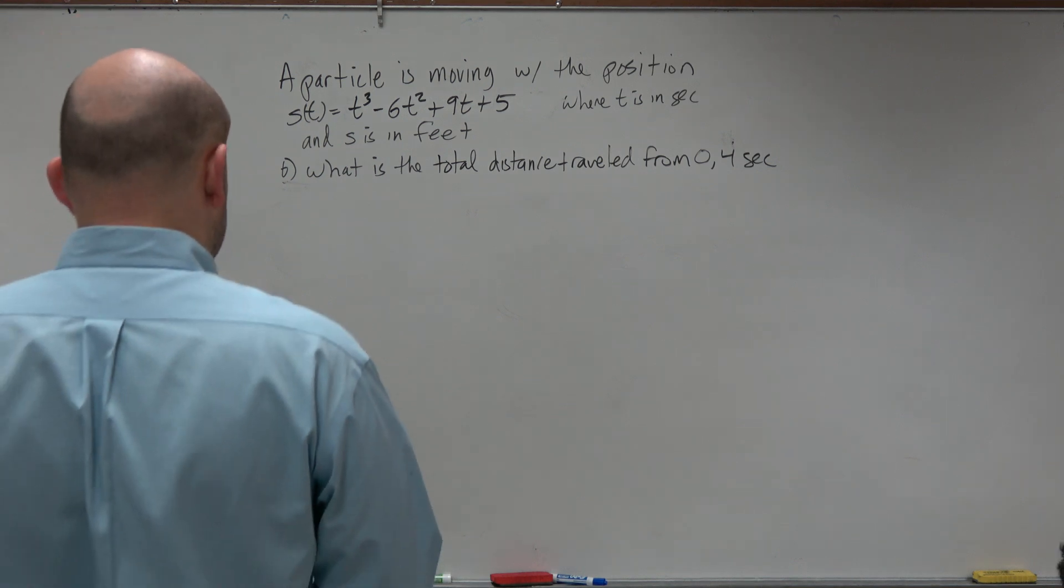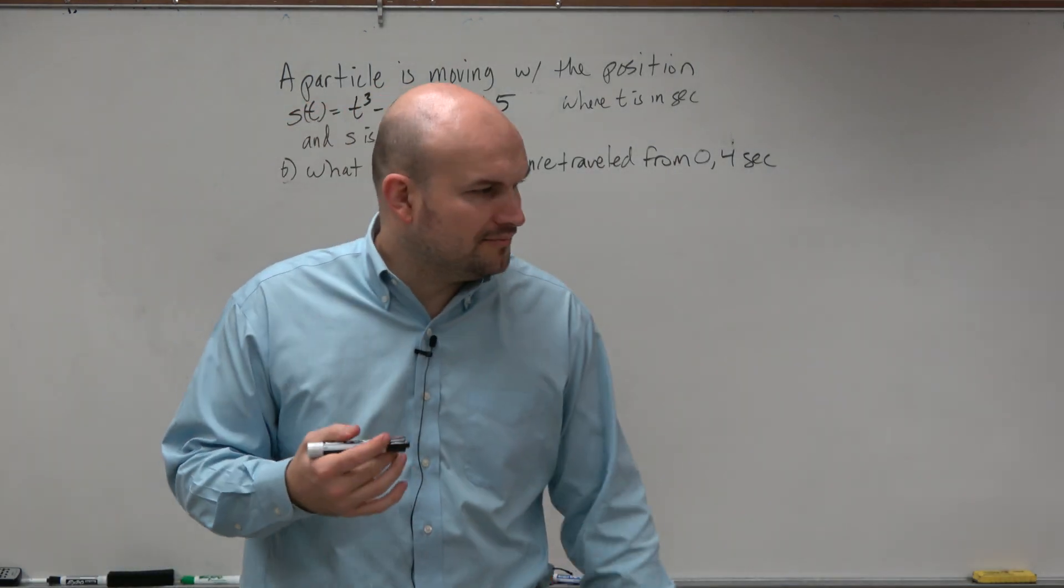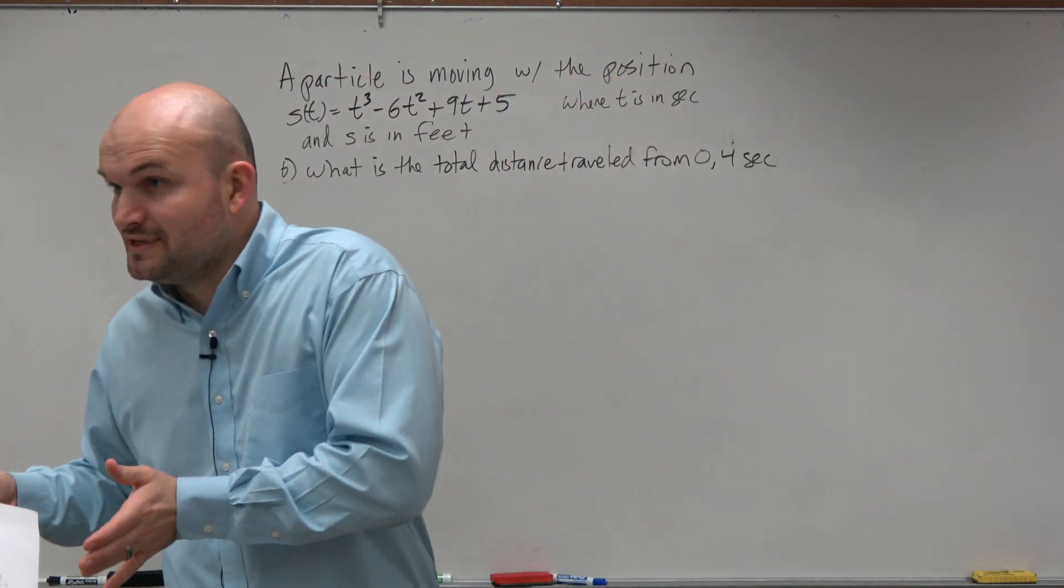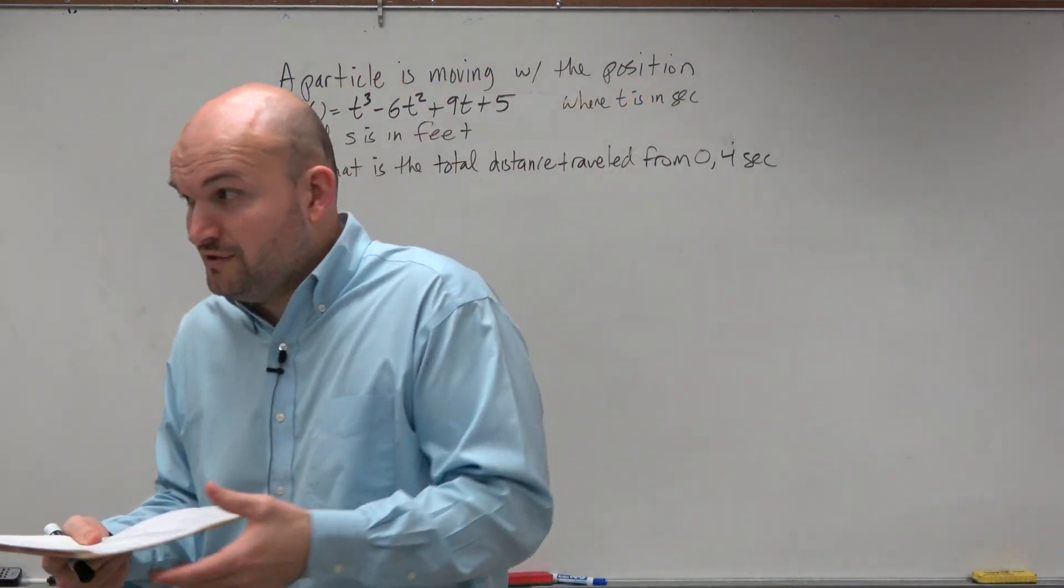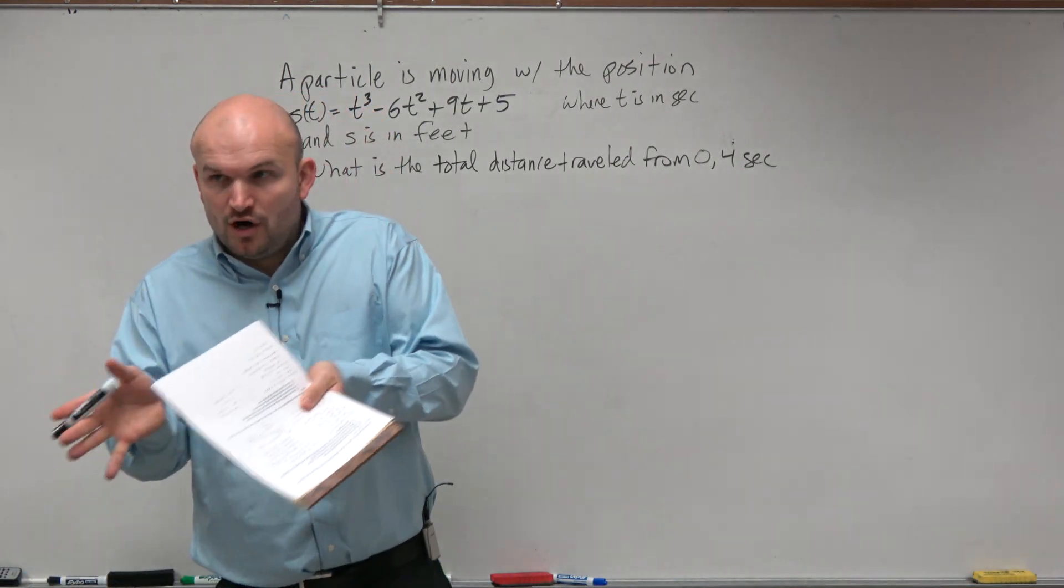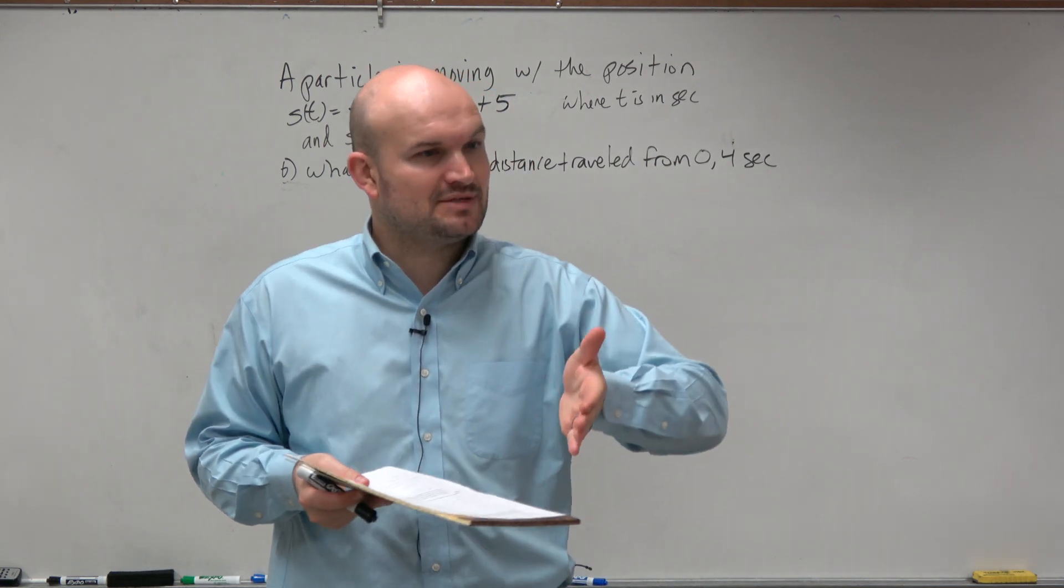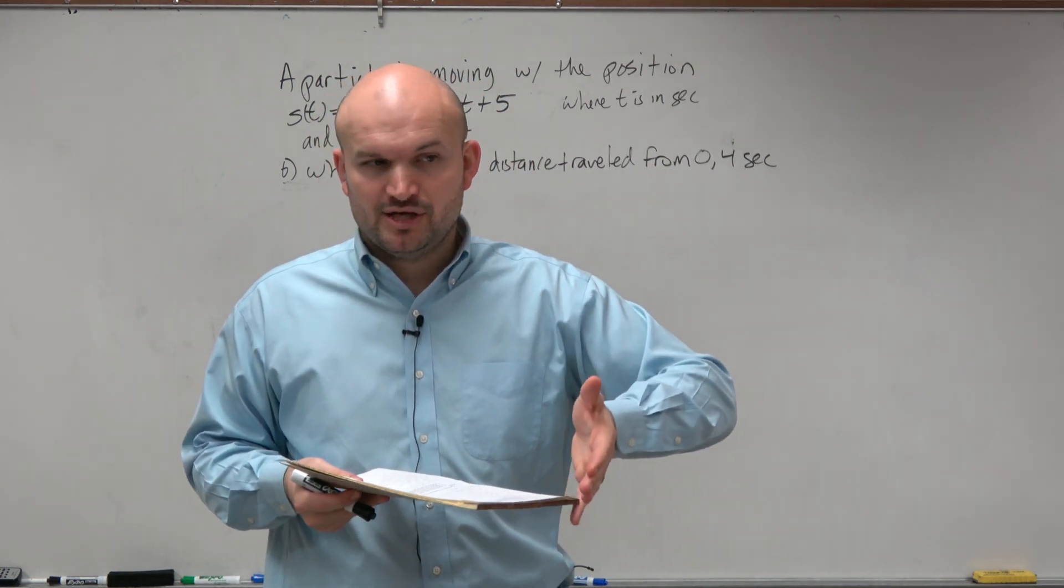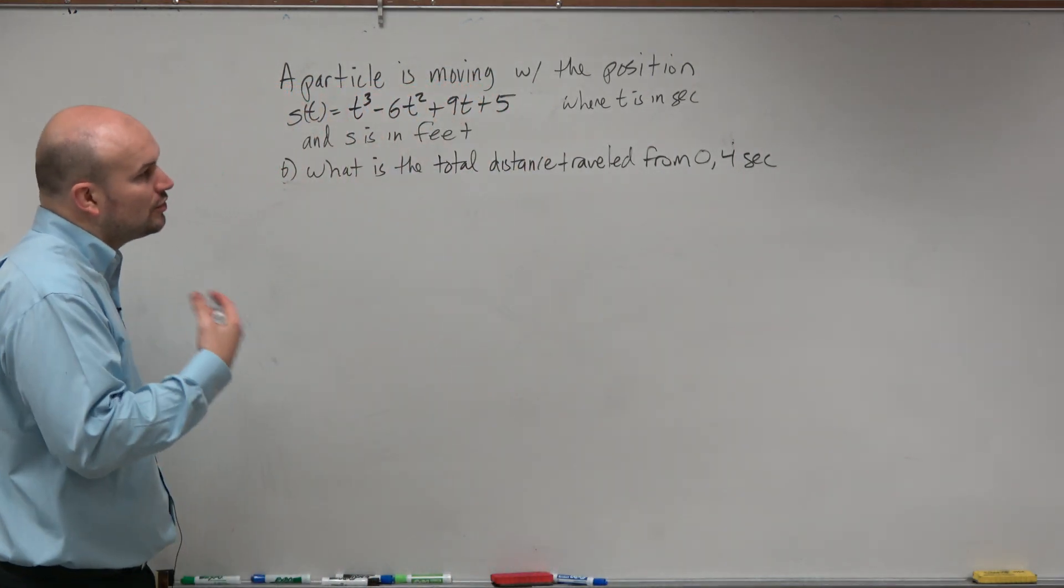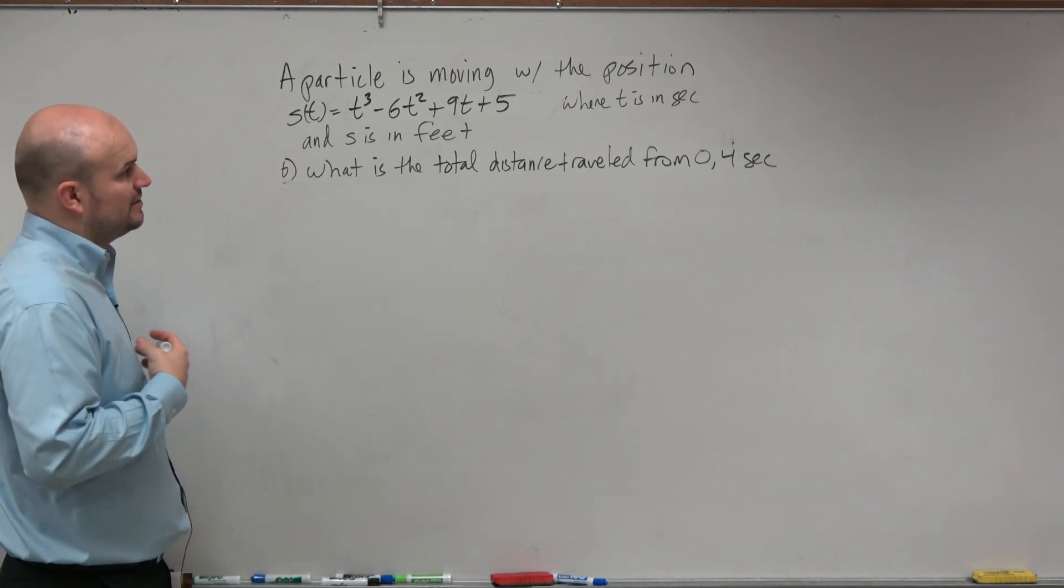If we're looking for the total distance traveled, we're looking for when this particle is moving to the right, as well as moving to the left and then moving back to the right. Whenever it changes position, we're looking for what is that total distance, the absolute value of all these directions. We've got to be careful, because you can run four miles and run four miles back and your displacement is zero, but you traveled eight miles. That's what we're looking for, the total distance traveled, the absolute value of the distance traveled without dealing with the direction.